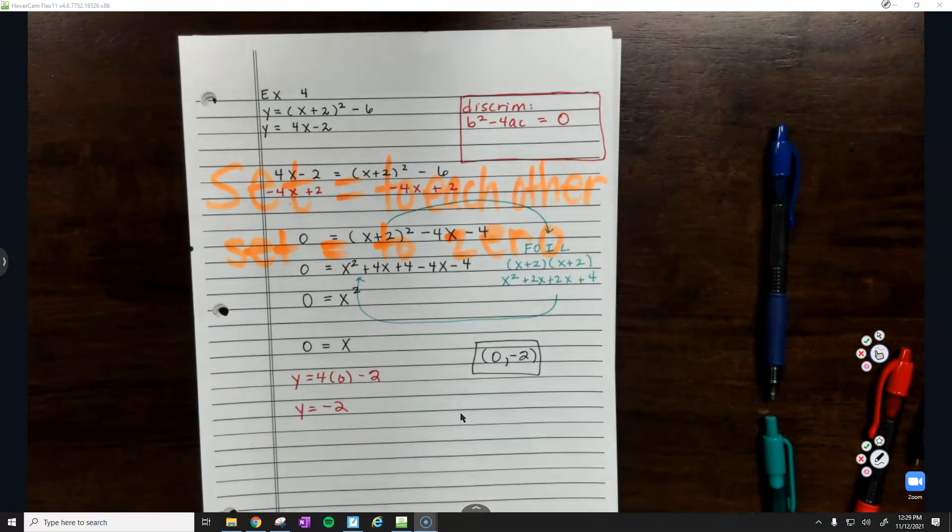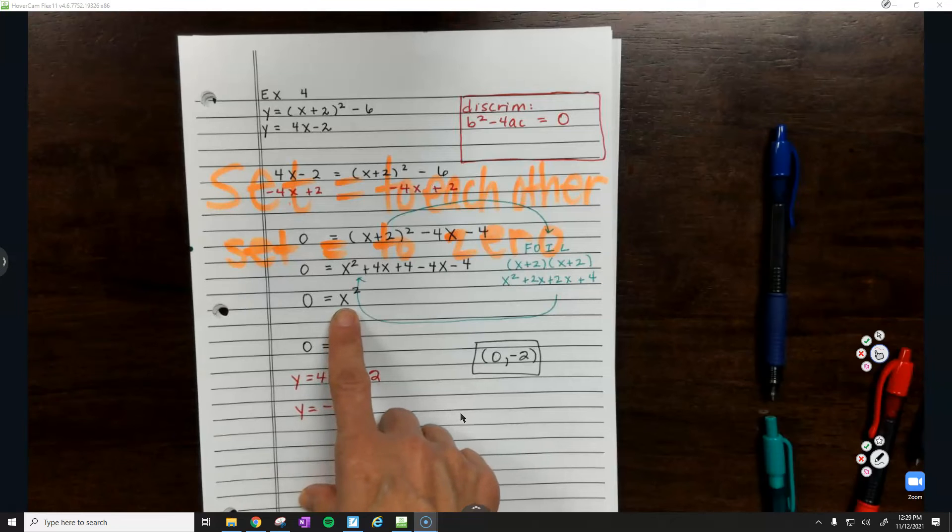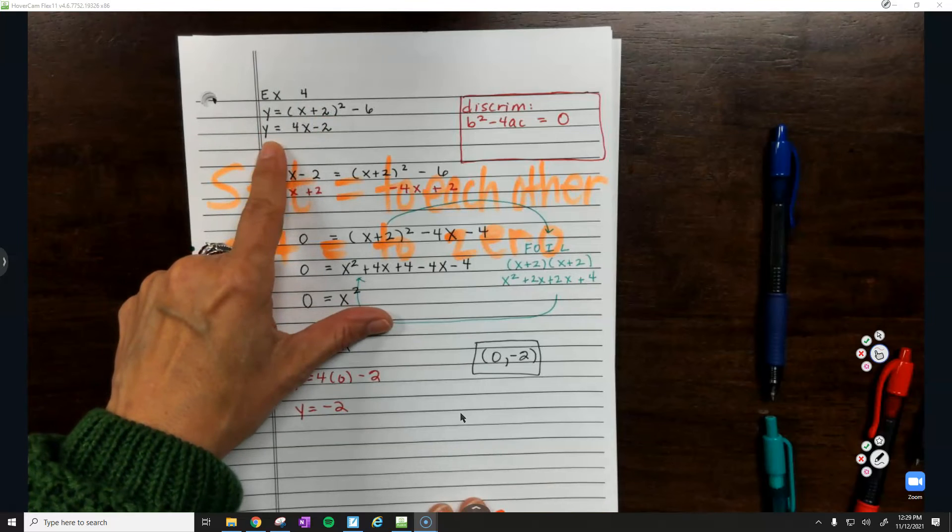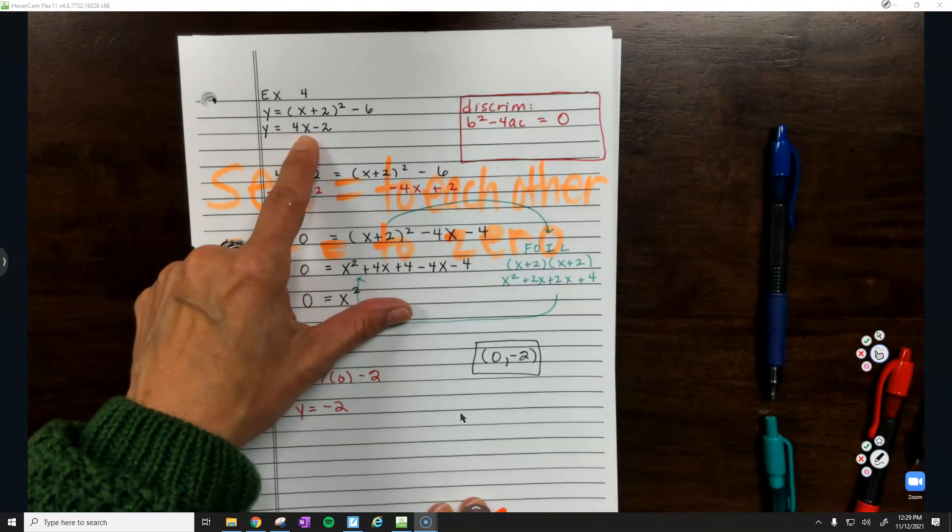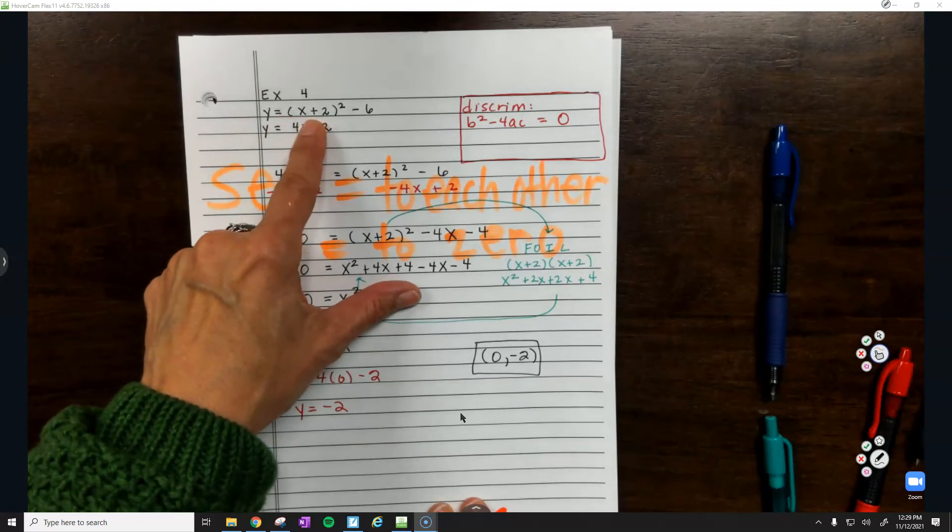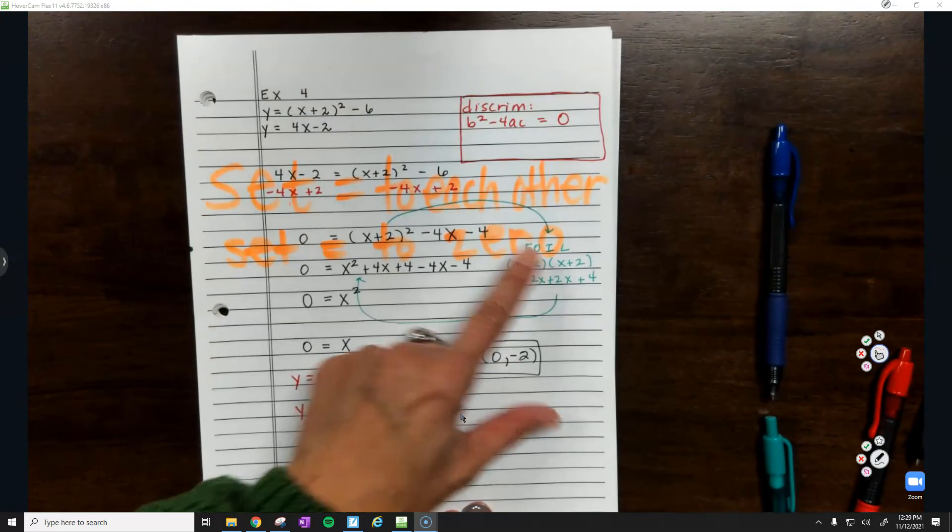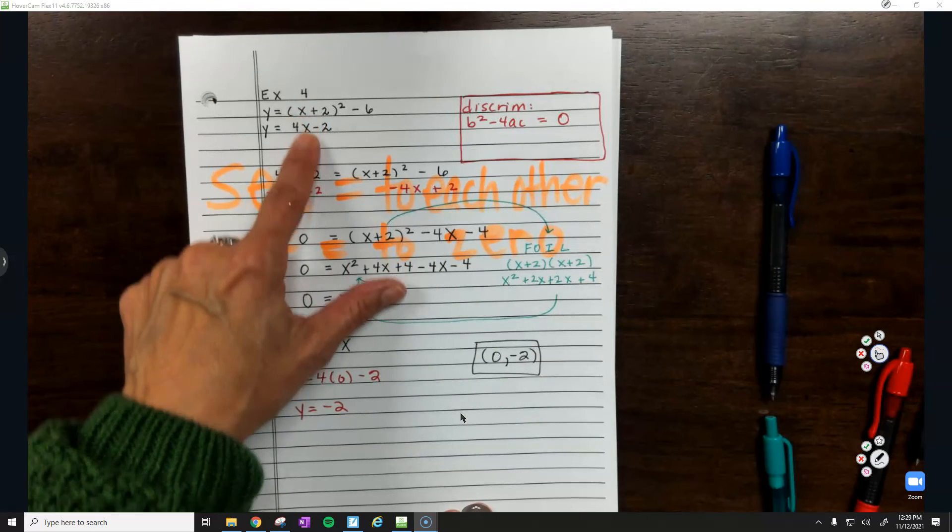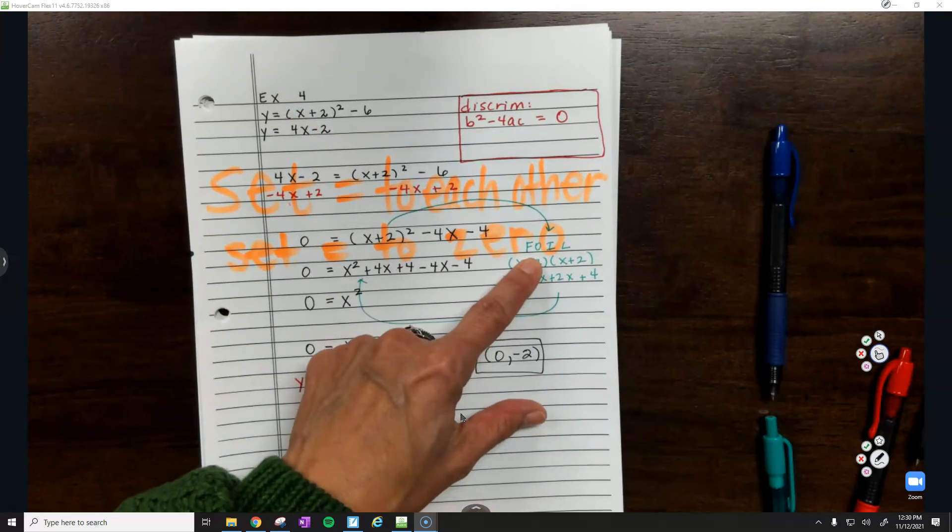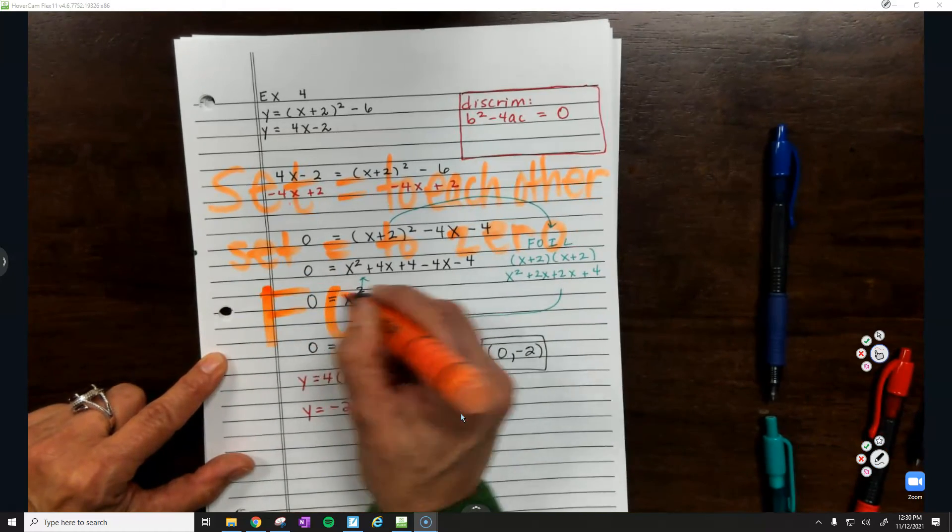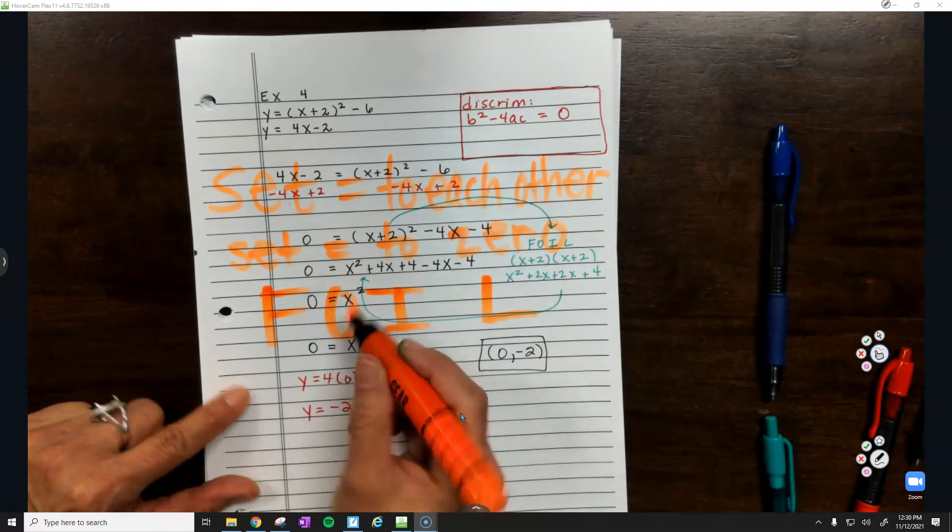Why did we FOIL? Too many x's. You can never solve for x unless you are only writing it once. When you have y equals something with an x, and y equals something with an x stuck inside parentheses, you're always going to FOIL. If you have parentheses and x's on both sides, you're always going to FOIL. So we did have to FOIL. And after we FOILed, we solved.